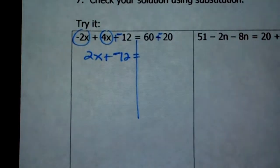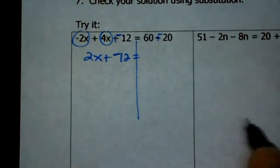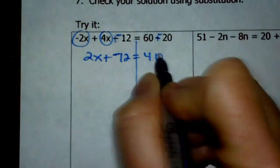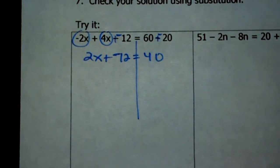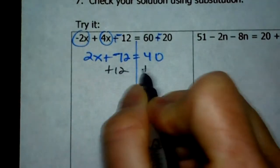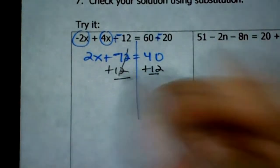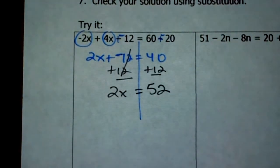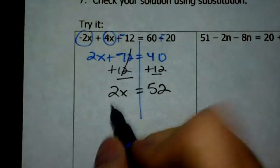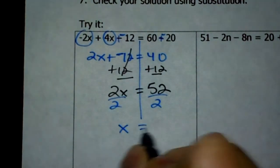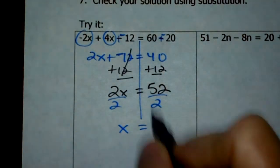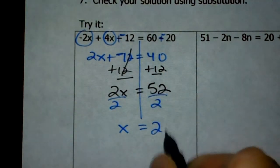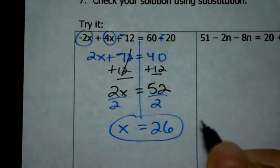On the right side of the equal sign, 60 and negative 20 are like terms. 60 plus negative 20, or 60 minus 20, is 40. Now all we have left is a two-step. I want 2x by itself, so I'm going to add a positive 12. Those cancel, and you're left with 2x equals 52. This is a one-step — divide by 2. 2 goes into 52: 2 goes into 5 twice with 1 left over, and 2 goes into 12 six times. So x equals 26.